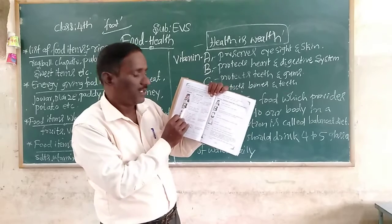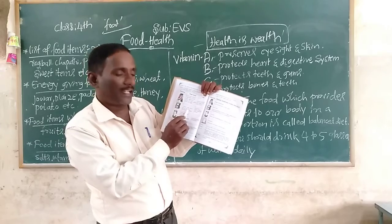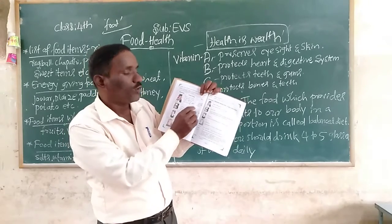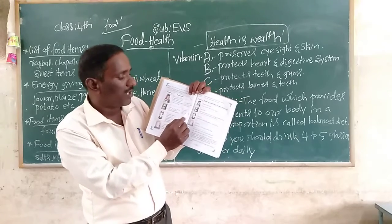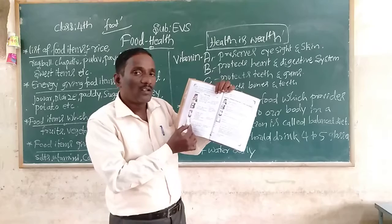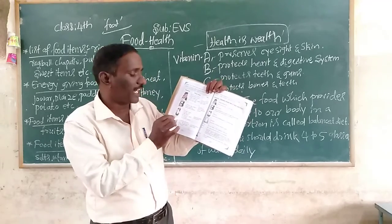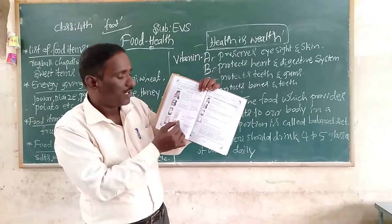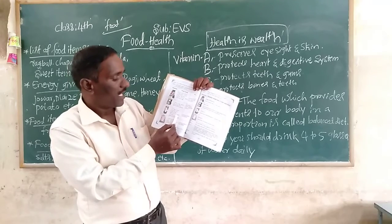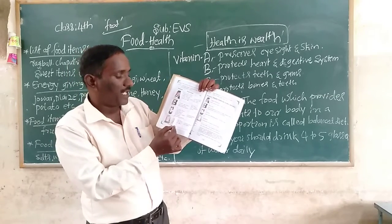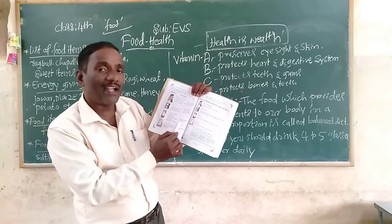Vitamin B is found in wheat, ragi, black gram, greens, and germinated seeds. Uses of Vitamin B: protects skin and all digestive systems. Next, Vitamin C is found in orange, lemon, tomato, raw vegetables, amla, apple, pineapple, and germinated seeds. Uses of Vitamin C: protects teeth and gums.